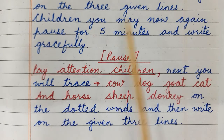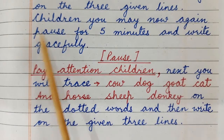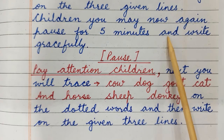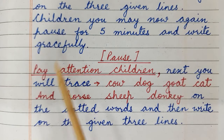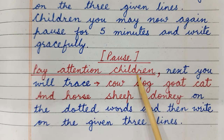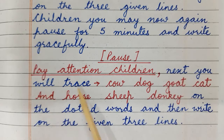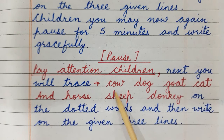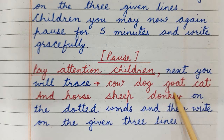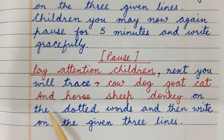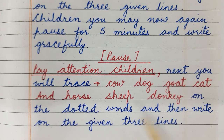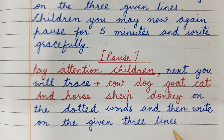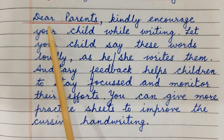Children, you may now again pause for 5 minutes and write gracefully. Pay attention children — next you will trace: cow, dog, goat, cat, horse, sheep, donkey on the dotted words, and then write on the given 3 lines.